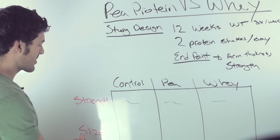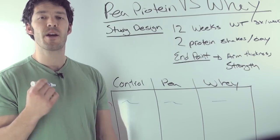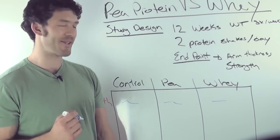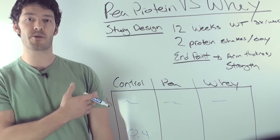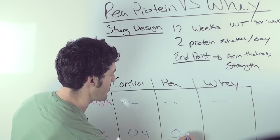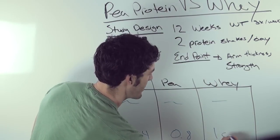Now, check this out. In terms of muscle size, hypertrophy, which would be a good indicator of muscle protein synthesis, the control group only grew by 0.4 centimeters on the bicep, the pea protein group grew by 0.8 centimeters, and the whey protein group grew by 1 centimeter.